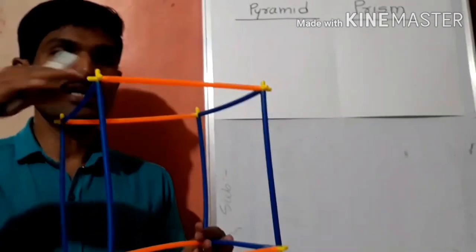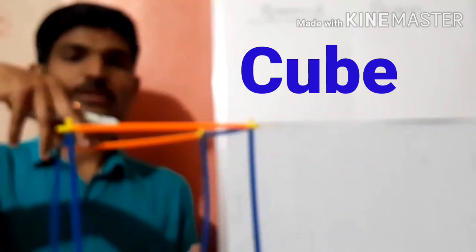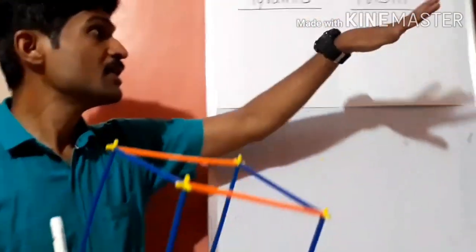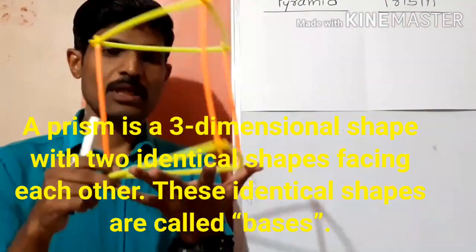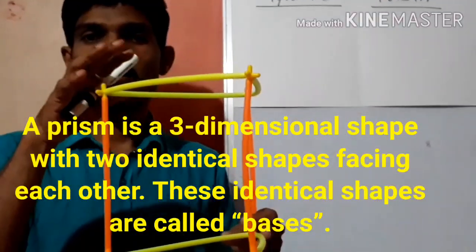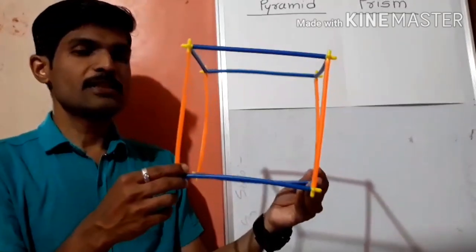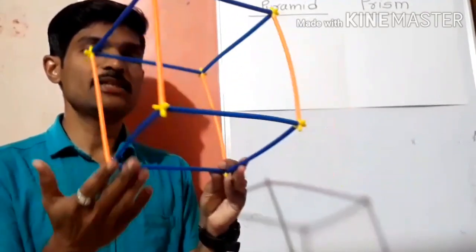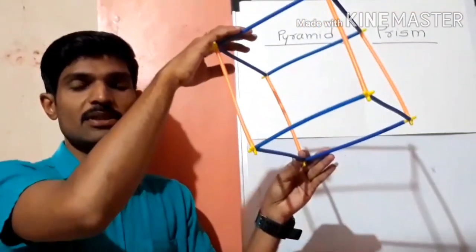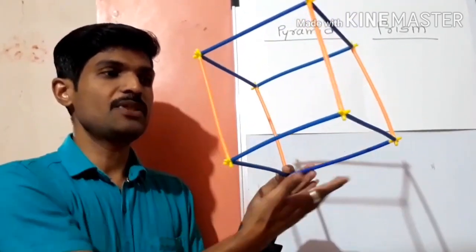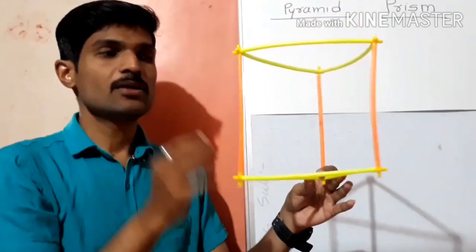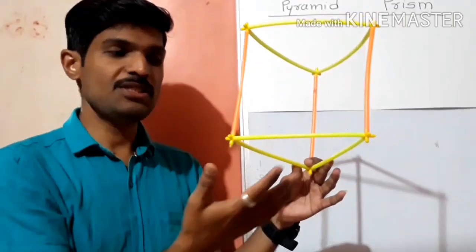The base is square and the upper face is flat — the top of that shape is flat. All three dimensional shapes where the top face is flat are called prisms. If the base of a shape is a triangle and the upper top face is also a flat surface, this is also a prism — a triangular prism.